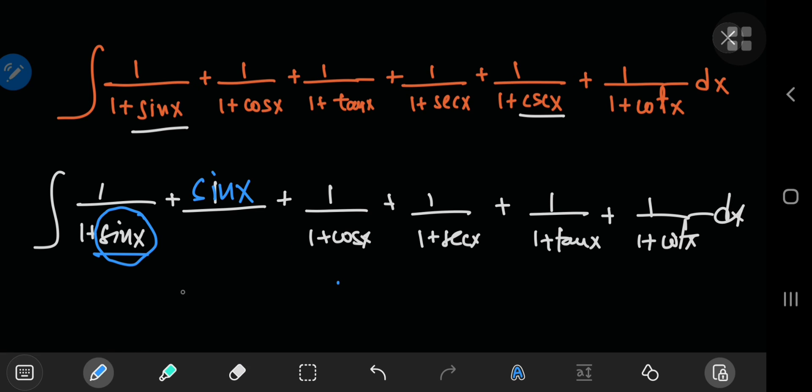The same logic applies here where you can use the cosine ratio. You will now have the cosine of x divided by 1 plus the cosine of x. By a similar token, you will have the tangent of x divided by 1 plus tangent of x.